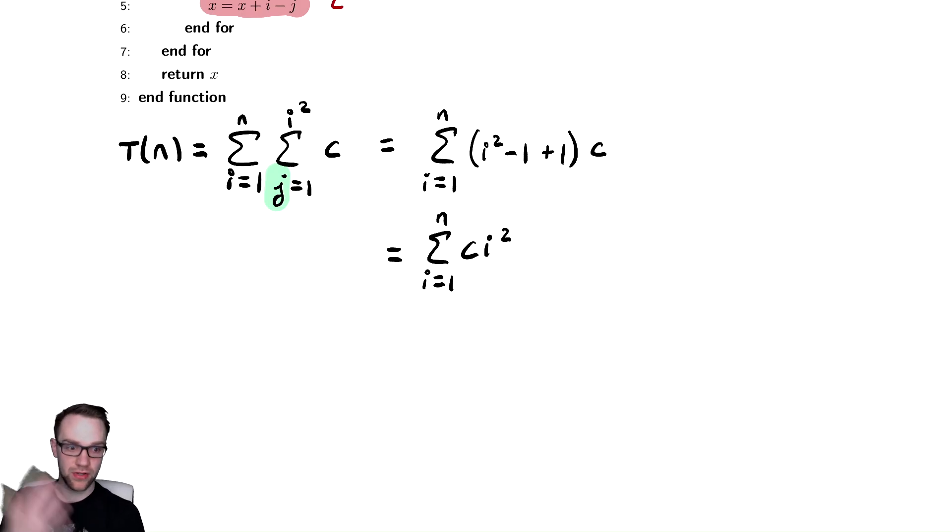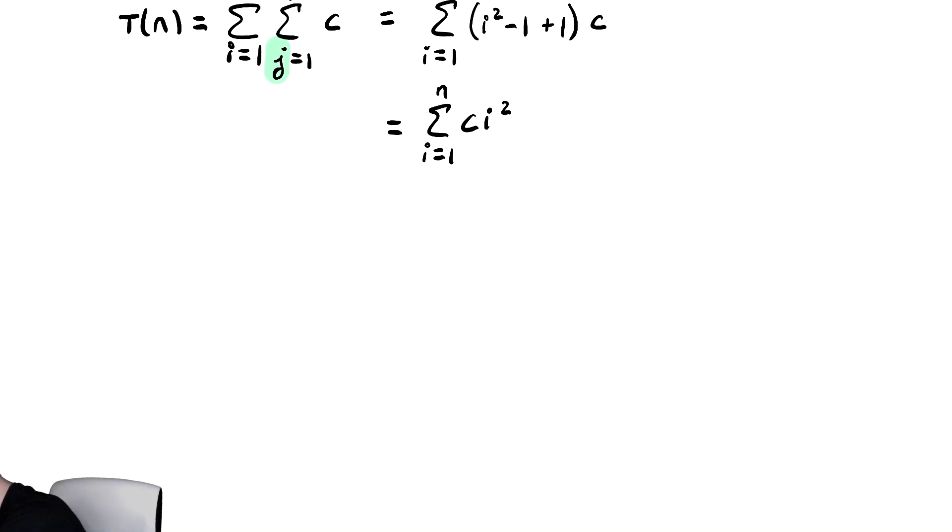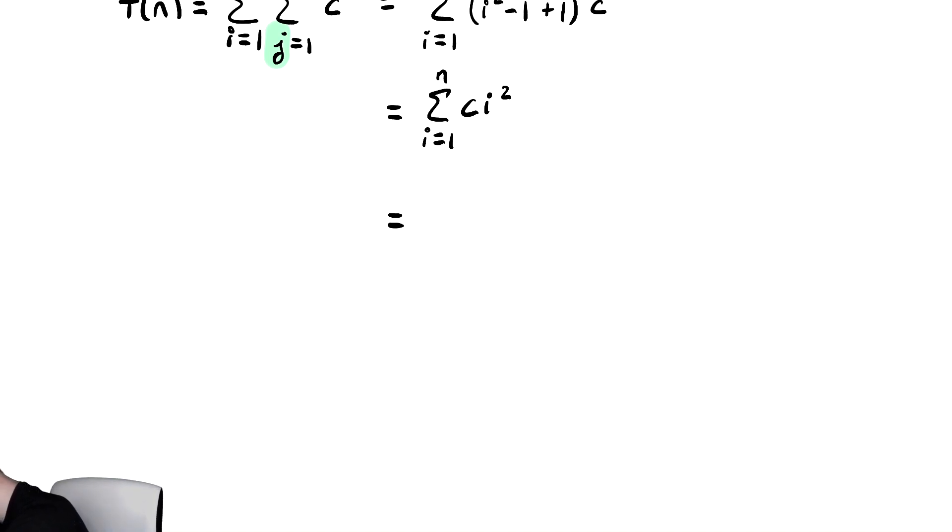And now there are several different ways that we can analyze this code. We can either analyze it by trying to use our known formula for the sum of squares, or we can analyze this by bounding. Let's try and do our known formula. In general, that's usually considered better and we'll see why at the end. So I'm going to factor out the c so that we can try to get it in the nicest form possible. So we have c times the sum from i equals one to n of i².